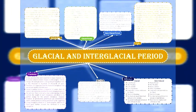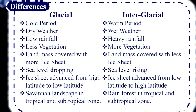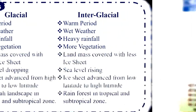Differences between glacial and interglacial: Glacial is a very cold period; on the other hand, interglacial is a warm period. Glacial weather is very dry; on the other hand, interglacial weather is humid. There is lower rainfall in the glacial period and very high rainfall in the interglacial period. Less vegetation in glacial versus more vegetation in interglacial. Land was covered with more ice sheets or glaciers during glacial, and less ice sheets or glaciers during interglacial.